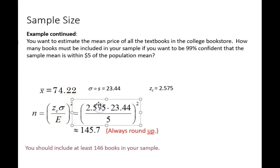If we plug in the values, z for a 99% confidence interval gives us from the standard normal table the value 2.575. We know the standard deviation of the population is 23.44. Multiply those and divide by the given E value of $5, and we get n equals 145.7. We always round up, so 146 people is what it would take to achieve this 99% level of confidence that we contain the actual population mean within our interval.